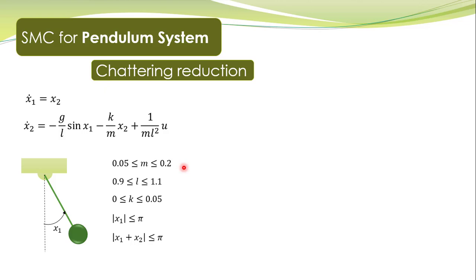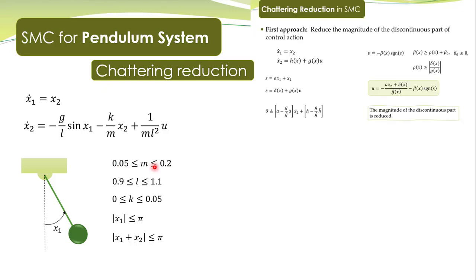It is convenient to take the average value of the two extreme values as the nominal value. So m-hat is the average value of 0.2 and 0.05. Likewise, l-hat, the nominal value of l, is equal to 1. The nominal value of k is the average value of its bounds, which is 0.025.